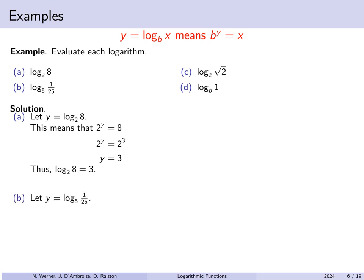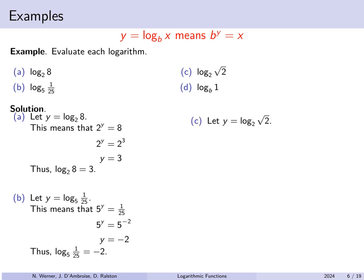For part (b), let y equal log base 5 of 1/25. Converting: 5 to the y equals 1/25. Since 1/25 equals 5 to the negative 2, we have 5 to the y equals 5 to the negative 2, so y equals negative 2. The logarithm base 5 of 1/25 is exactly negative 2. For part (c), log base 2 of root 2: let y equal that, so 2 to the y equals root 2, which is 2 to the 1/2. Therefore y equals 1/2, and log base 2 of root 2 is exactly equal to 1/2.